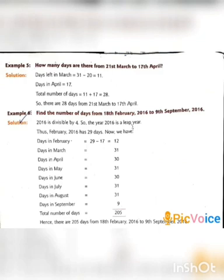Let's see another question: how many days are there from 21st March to 17th April? To find the number of days, first we see how many days are left in March: 31 minus 20 equals 11 days. Days in April will be 17. Total number of days is 11 plus 17, that is 28. So, there are 28 days from 21st March to 17th April.